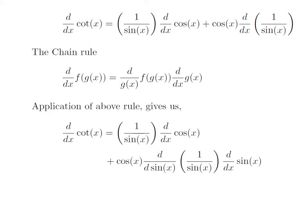So the application of the chain rule gives us: differentiation of cotangent of x with respect to x is equal to 1 divided by sine of x into differentiation of cosine of x with respect to x, plus cosine of x into differentiation of 1 divided by sine of x with respect to sine of x, into differentiation of sine of x with respect to x.